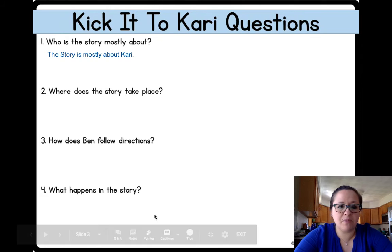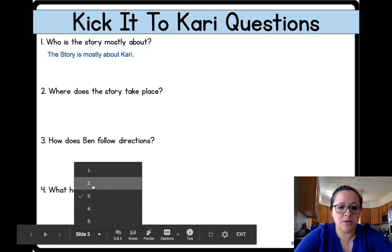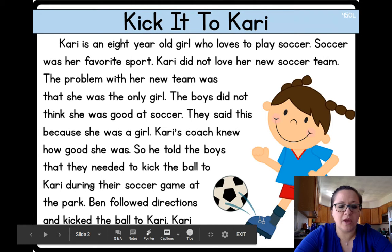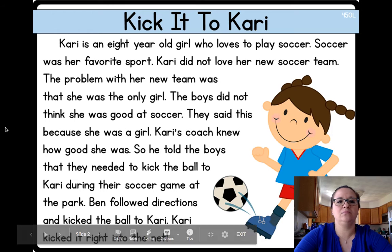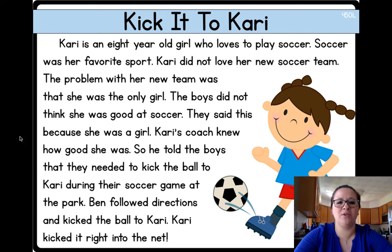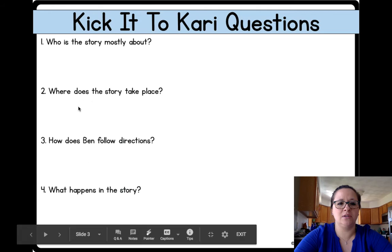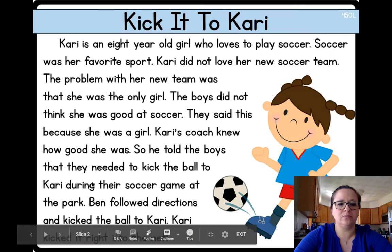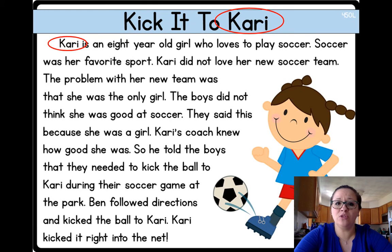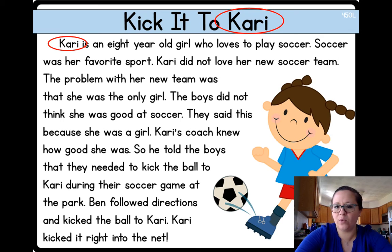All right, so now let's look back. Number two: where does the story take place? We've got Kari — that's the main character. Usually it's in the beginning, but I think this is tricky. We're going to have to read this whole thing one more time to see where it takes place because it doesn't tell us right away. Look at the first sentence: Kari is an eight-year-old girl who loves to play soccer. Did that tell us where the story takes place? No, all we know is she likes to play soccer.